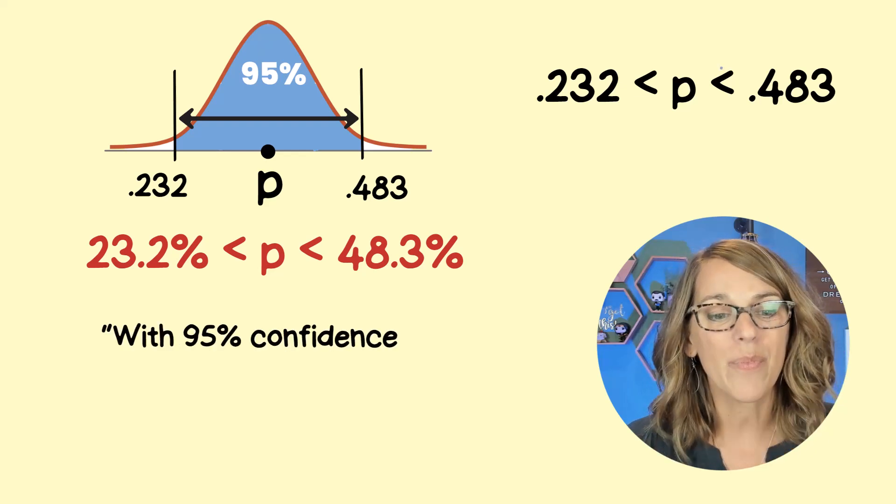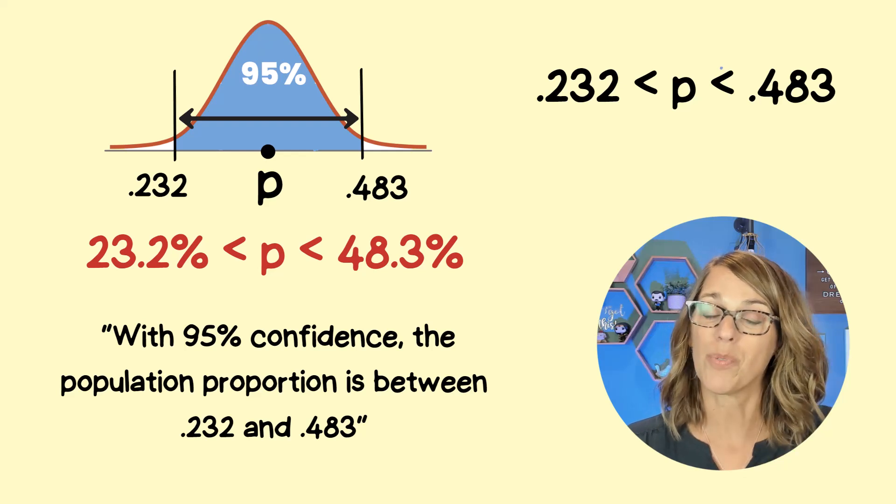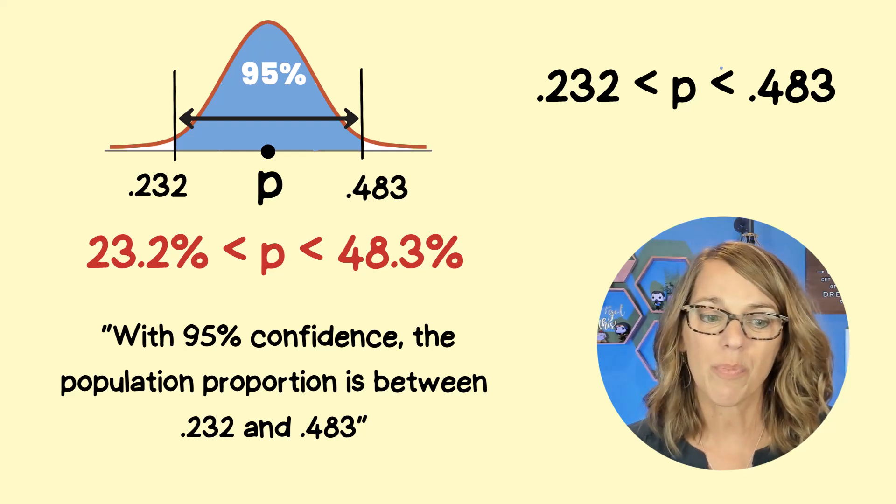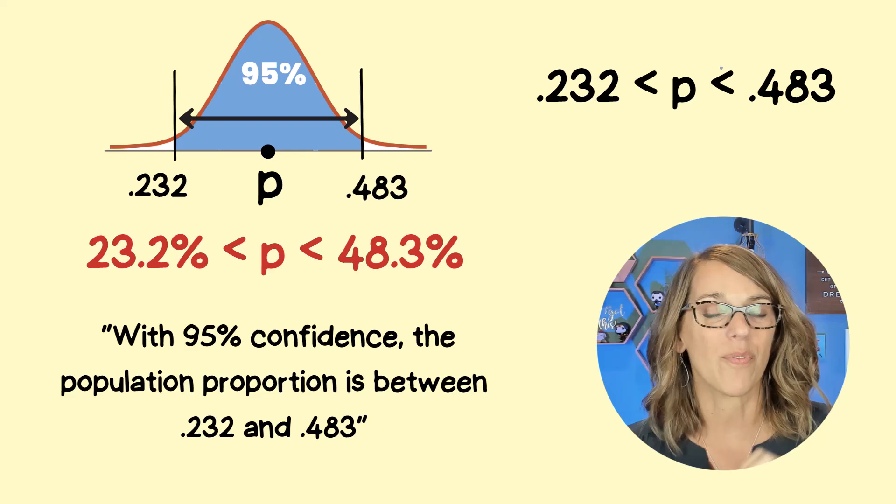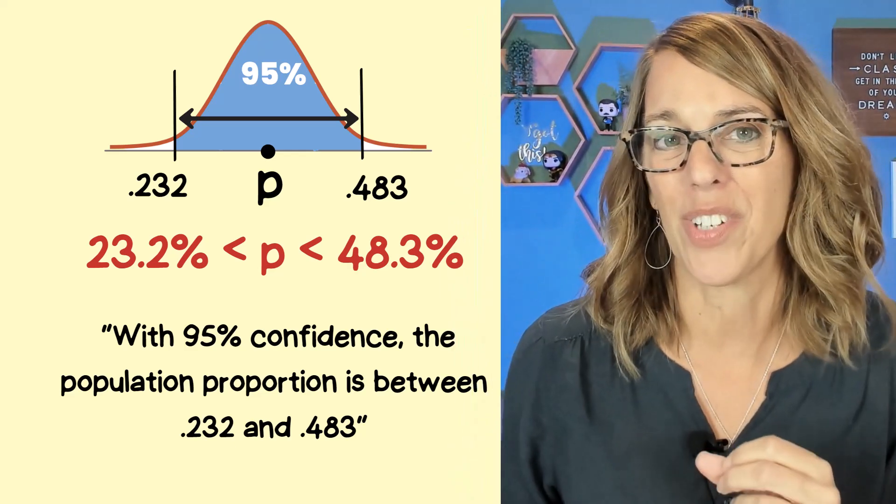We're going to state that with 95% confidence, the population proportion is between those two values, 0.232 and 0.483. But what does 95% confidence actually mean?